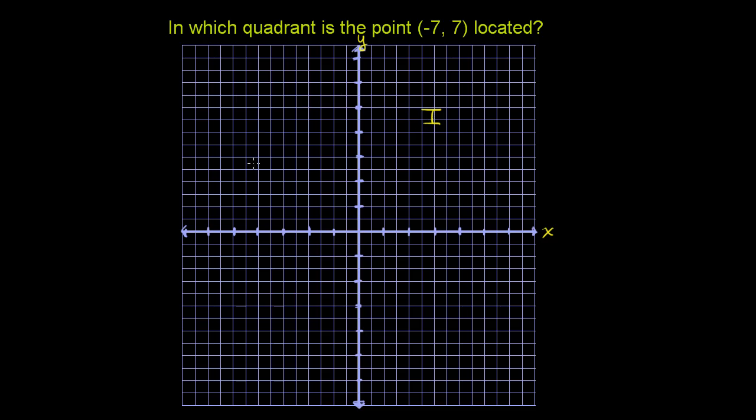Then if we move counterclockwise around the coordinate plane, this quadrant, where the x-values are negative and the y-values are positive, we call this the second quadrant.